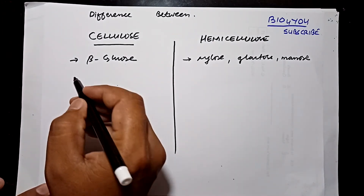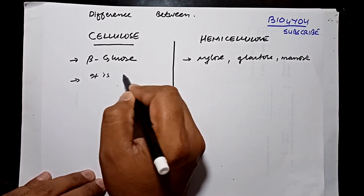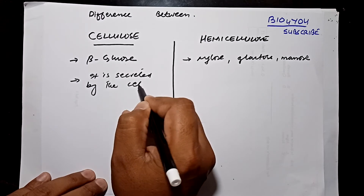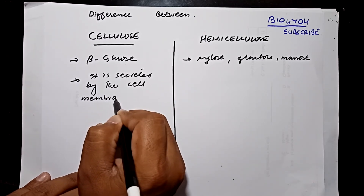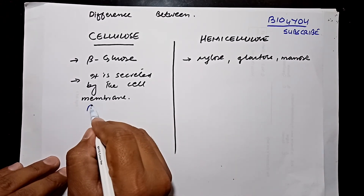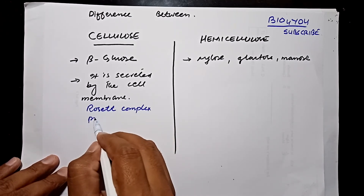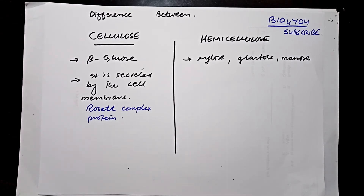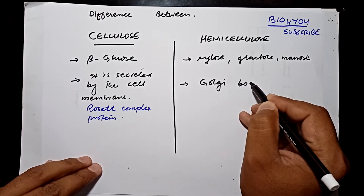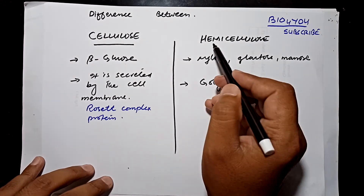Cellulose is secreted by the cell membrane. In the cell membrane, there is a specialized protein responsible for secreting cellulose, and that protein is known as the rosette complex protein. Hemicellulose, on the other hand, is secreted by the Golgi bodies.